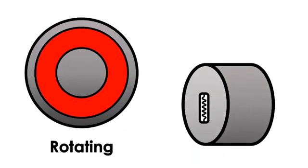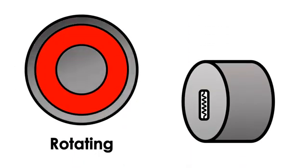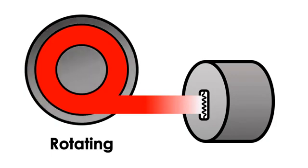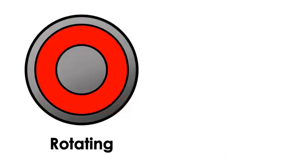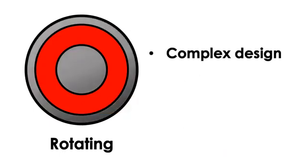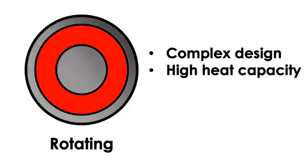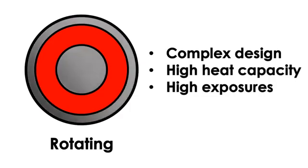With rotating anodes, the anode is literally a rotating disk. This has the effect of spreading out those electrons over a much larger area and significantly increasing the heat capacity of the x-ray tube. Rotating anodes are essential for general radiography. So what do we say about rotating anodes? We can say that they are a little bit more complex. However, they have very high heat capacity with that large focal track, and because of that, they can be used for high exposures.